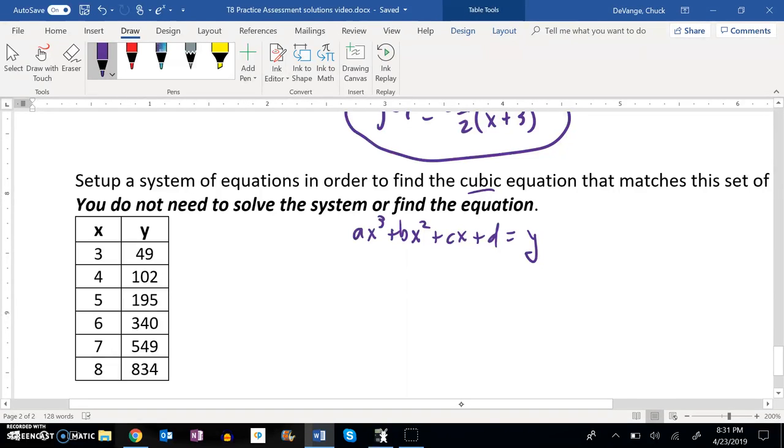So I have 3³ times a plus 3² times b. Notice I'm putting it into the x spot. Plus 3 times c plus d equals my y value of 49.